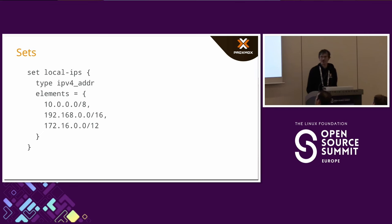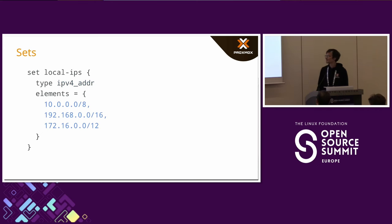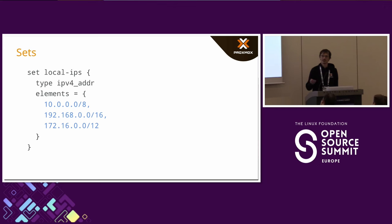One data structure available in NF Tables is a set. Sets have a type — in this case, IPv4 address — and they contain elements. Sets are usually used to match for containment. For example, you could have all local IP ranges in a set, and if you wanted to check if a packet is coming from a local IP address, you would just match against this set and take whatever action you want.